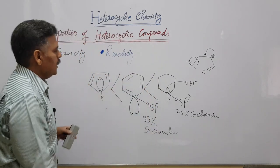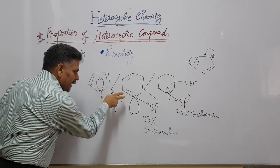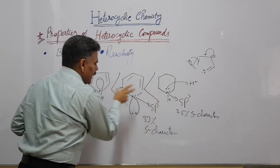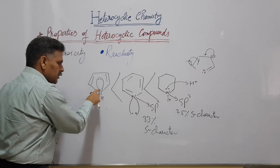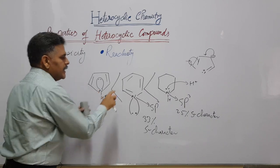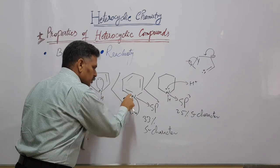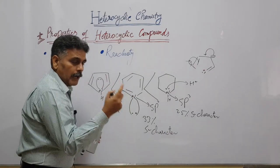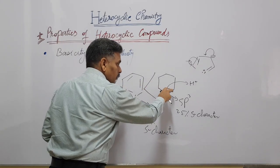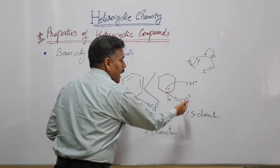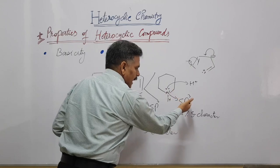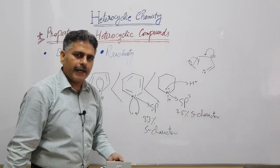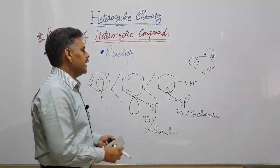So piperidine is more basic as compared to pyridine and pyrrole. The basicity difference is: in pyrrole the lone pair is not available due to resonance; in pyridine the lone pair is available but nitrogen is sp2 hybridized; in piperidine the lone pair is available and nitrogen is sp3 hybridized, giving it the greatest ability to donate its electron pair.